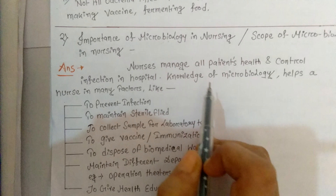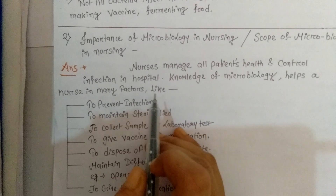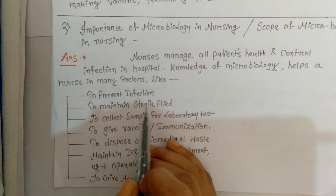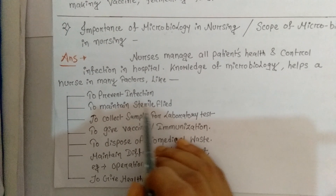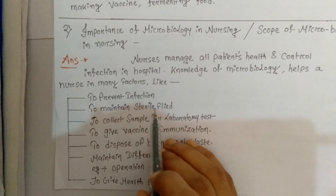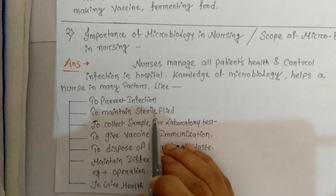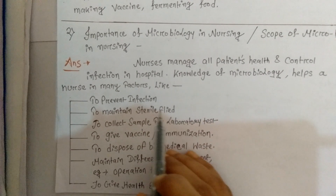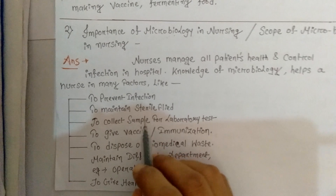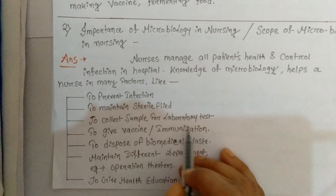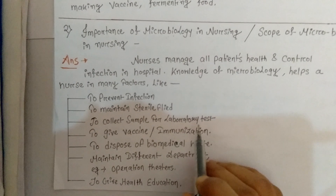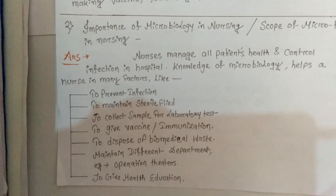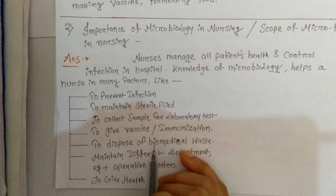Knowledge of microbiology helps a nurse in many sectors. The first one is to prevent infection — it will help a nurse to prevent infection. The second one is to maintain sterile field. Sterilization is the process of killing, deactivating, and destroying all forms of life — microorganisms, bacteria, viruses, anything. Third is to collect samples for laboratory tests, such as blood samples and urine samples.